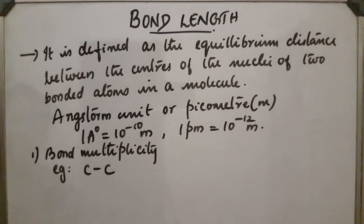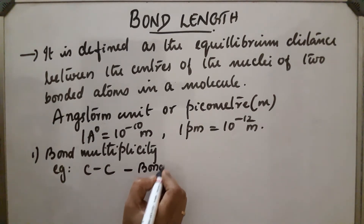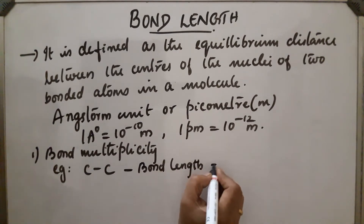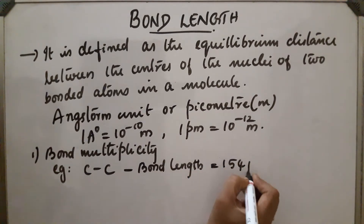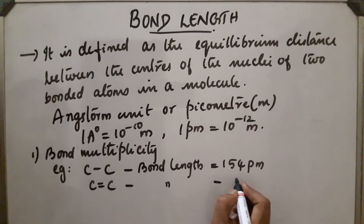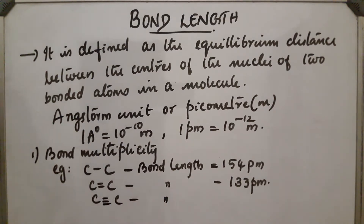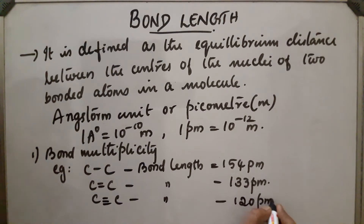In C single bond C, the bond length is found to be 154 pm. In C double bond C, bond length is 133 pm. In C triple bond C, bond length is found to be 120 pm. So from this we can see that as bond multiplicity increases, bond length decreases.